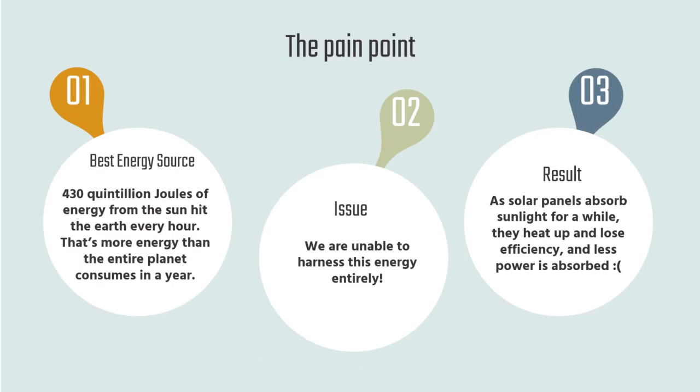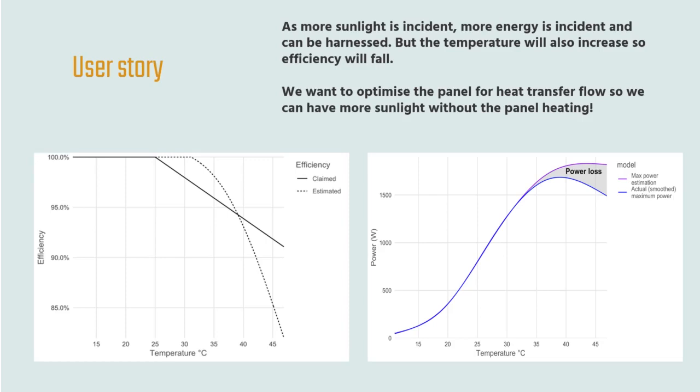Now we come to the available information, user story, and the problem. Here's the context: 430 quintillion joules of energy from the sun hit the earth every hour, which is more than the entire planet consumes in a year. However, we're not able to harness this energy for many reasons. One thing we can really try to fix is the effectiveness of solar panels — as they heat up in sunlight they lose efficiency and less power is absorbed.